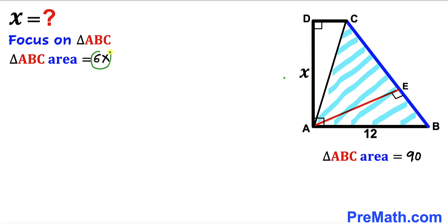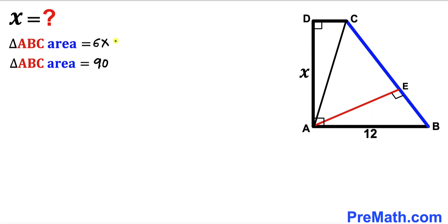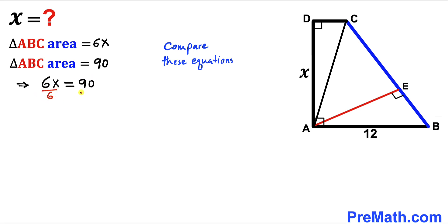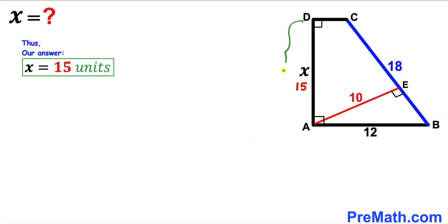We now have two expressions for the area of triangle ABC: 90 square units and 6X. Since the left-hand sides are identical, we equate the right-hand sides: 6X equals 90. Dividing both sides by 6, X equals 15 units. So side length AD turns out to be 15 units — that's our final answer.